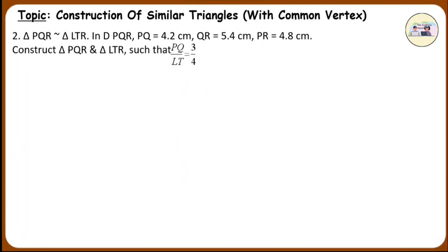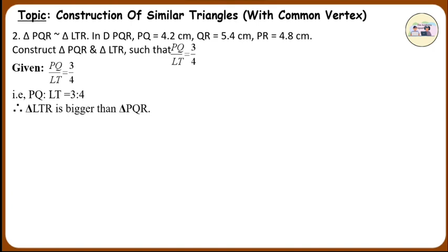Type 2: Construction of two triangles with common vertex. Question 2. Triangle PQR is similar to triangle LTR. In triangle PQR, PQ is equal to 4.2 cm, QR is equal to 5.4 cm, PR is equal to 4.8 cm. Construct triangle PQR and triangle LTR such that PQ upon LT is equal to 3 upon 4. Analysis: Given PQ upon LT is equal to 3 upon 4, that is PQ is to LT is equal to 3 is to 4. From this ratio, we get an idea that triangle LTR is bigger than triangle PQR and R is a common vertex.